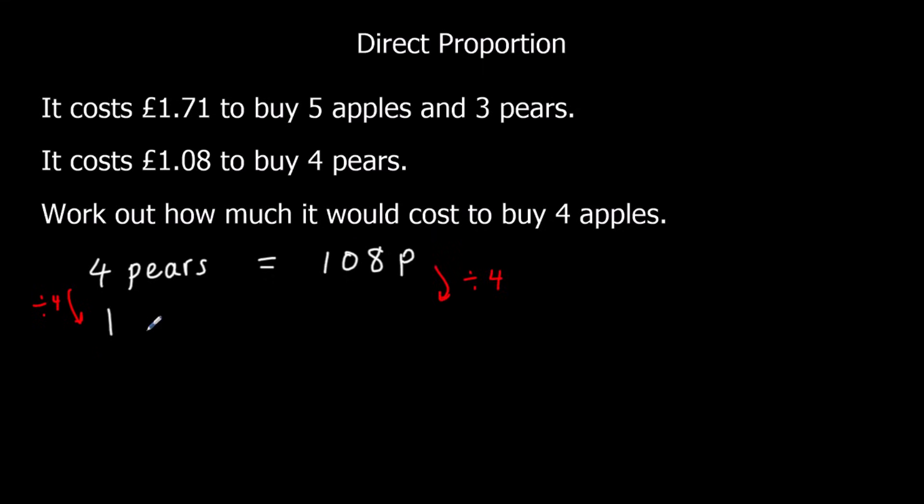So 1 pear is, so half of 108 is 54, and then half of 54 is 27. So 1 pear is 27p.